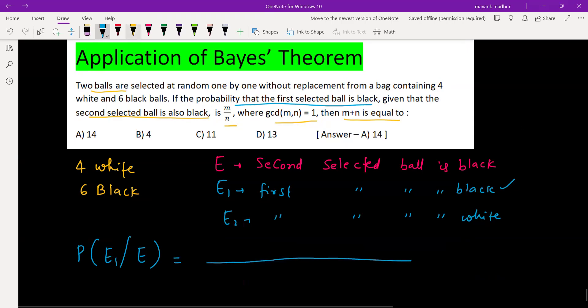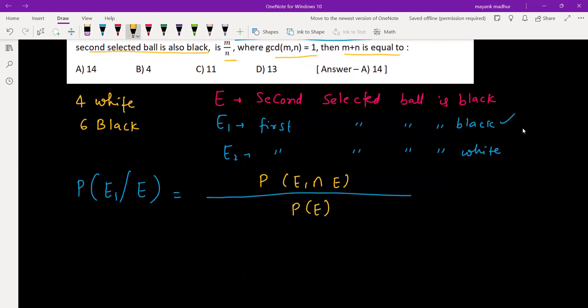Now Bayes theorem use P(E1|E). What is total event? Let's say E by P(E intersection E1) by P(E). It is a conditional probability and P(A|B) is P(A intersection B) by P(B). Now P(E), total event, this can happen two ways when E1 happened and total event given that E1 happened, plus E2 case, P(E2), P(E|E2).